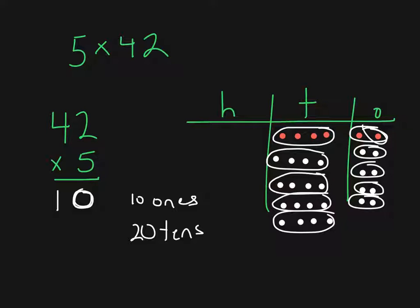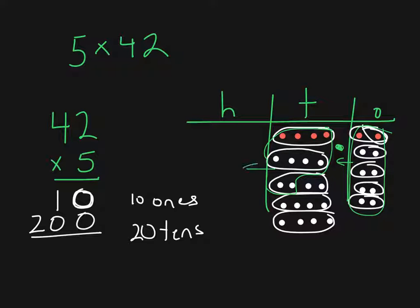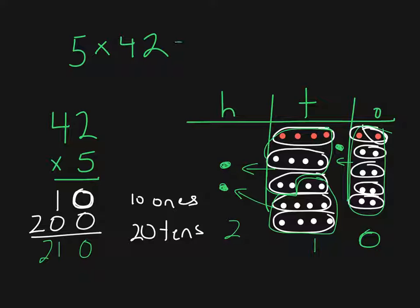I can rewrite twenty tens as two hundred. If I do all the bundling in my place value chart, we see that a group of ten ones gets bundled and regrouped as one ten, then a group of ten tens gets re-bundled as one hundred, and another group of ten tens gets re-bundled as another hundred. So I have two hundreds, one ten, and zero ones. My final answer is two hundred ten — five times forty-two is two hundred ten.